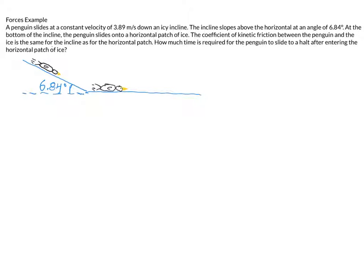Hey class, here's another example problem. This is one I actually used on the first exam a couple years ago and it really gave students a hard time. In fact, on my juniors abroad trip I heard a student complaining about the penguin problem as he calls it. In case you can't tell from my beautiful drawings, these are supposed to be pictures of a penguin sliding down a slope of 6.84 degrees at a constant speed of 3.89 meters per second.